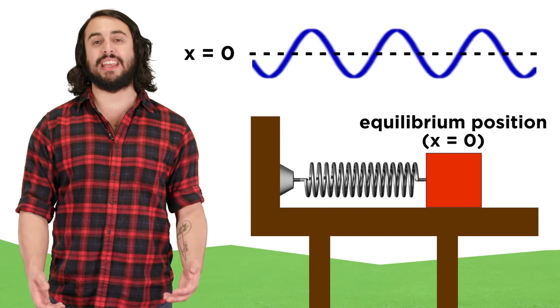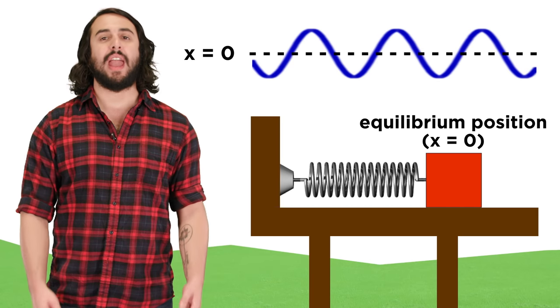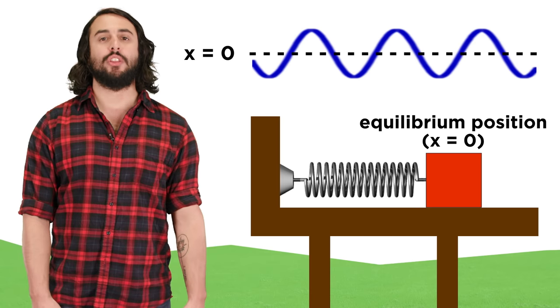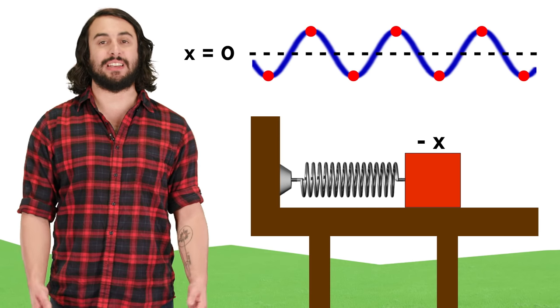X equals zero at the equilibrium position of the block, where it sat before we pulled it, and assuming zero friction, the block will oscillate between positive X and negative X indefinitely.